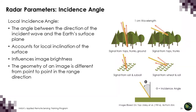The final radar parameter is incidence angle — the angle between the direction of the incident wave and the Earth's surface plane. In radar, the incidence angle increases across the swath from near to far range. Large angles are more sensitive to surface roughness and penetrate less into the medium, while low incidence angles result in higher backscatter and greater penetration. Lower incidence angles are therefore better at detecting inundated vegetation.